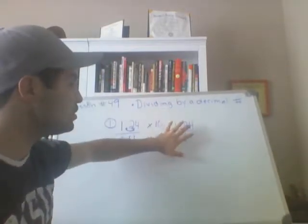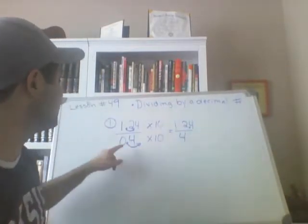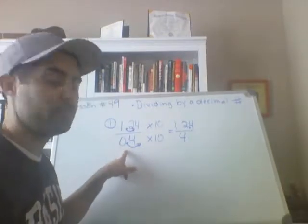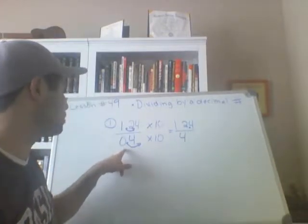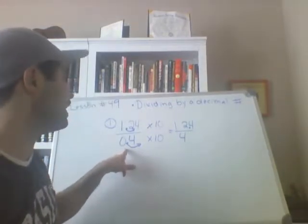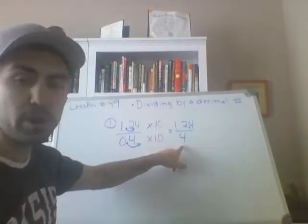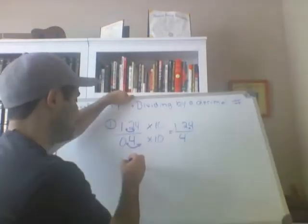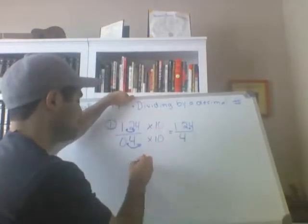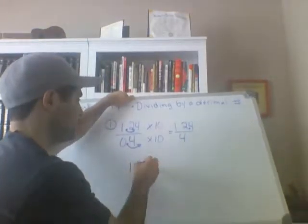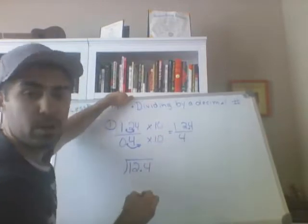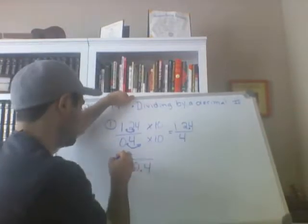Now this is an easier division problem because I don't have a decimal in the divisor — I have a whole number as the divisor. So it's going to be top, which is 12.4, divided by bottom, which is 4.